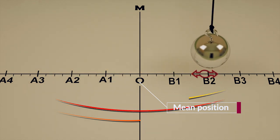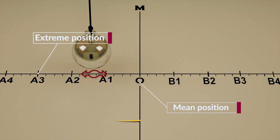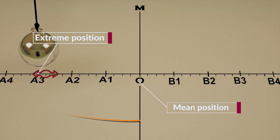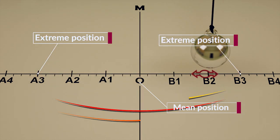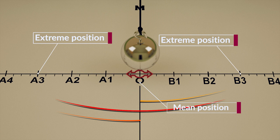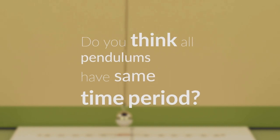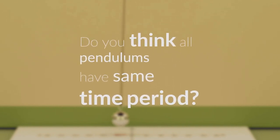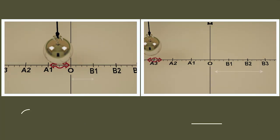The motion of the pendulum from the mean position O to an extreme point A, then to the other extreme point B, and back to O constitutes one oscillation. The time taken for one oscillation is called the time period of the pendulum. Do you think all pendulums have the same time period?